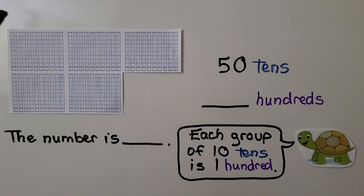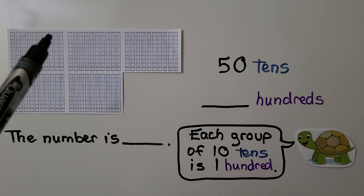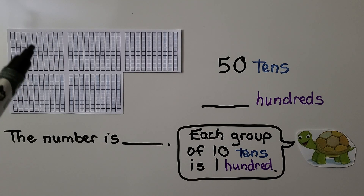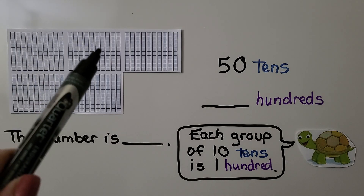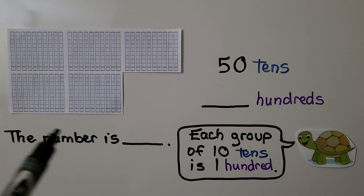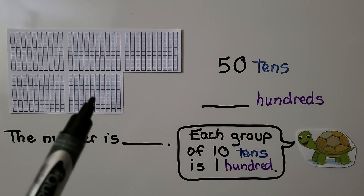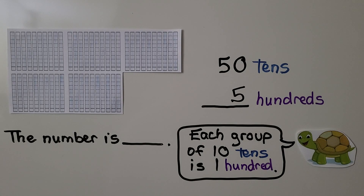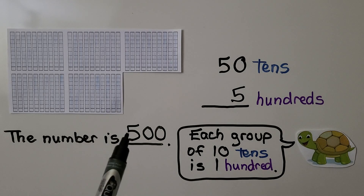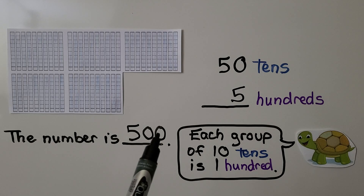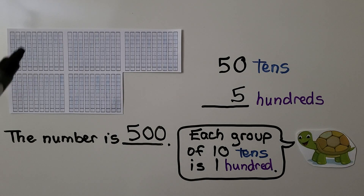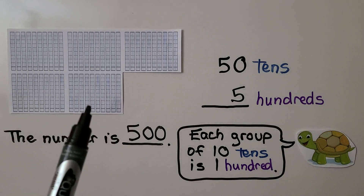Here we have 50 tens. How many hundreds are 50 tens? We have 10 tens, 20 tens, 30 tens, 40 tens, 50 tens. Each 10 tens is 100, so we have one, two, three, four, five hundreds. We write a five and a zero and a zero — a five in the hundreds place, zero in the tens place, and zero in the ones place. We have 500.